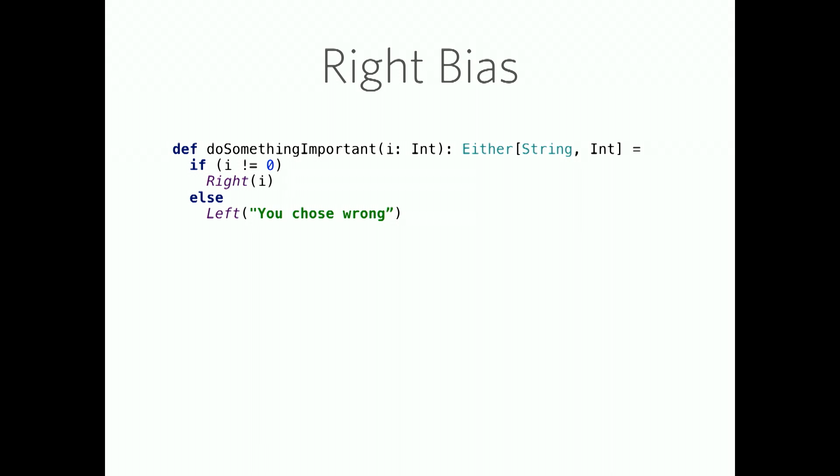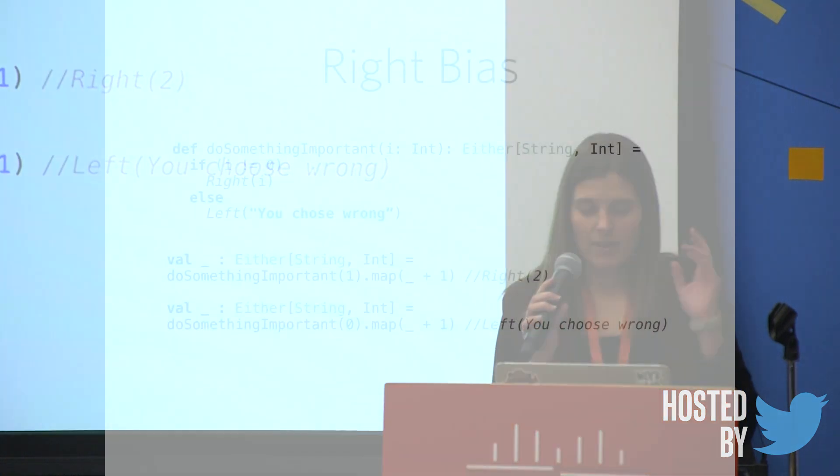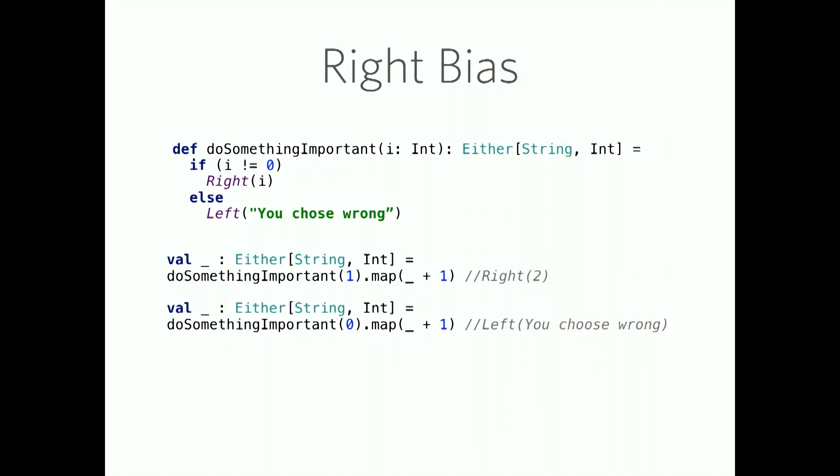I have here a function. It's doing something very important. You can tell because it's called do something important. We're passing in an int to it, and we're getting back an either of a string or an int. Basically, if our integer that we pass in is not zero, we will just wrap that value in a right, and we will return that as our either. Otherwise, we will return a string of you chose wrong. I've got a couple examples here. In both of these examples, our map function is simply adding one to the value, if the value is right, that is. Our first example, we're passing one in to do something important, which will give us back an either containing a right of one, so we end up with, in that first example, either containing a right of two. The second example, we are passing zero in to do something important. This gives us back our string wrapped in a left. In this case, the map function will not run, and we will simply have our left.